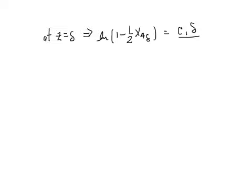Returning to our concentration profile, at z equal to delta, we must have that the log of 1 minus 1 half XA delta would be equal to C1 delta over 2 times the total concentration times the binary diffusion coefficient DA2. And again, we need to add our log 1 minus 1 half XA zero. So now we can substitute for C1 in terms of XA delta from the previous page and develop an implicit equation to determine XA delta.